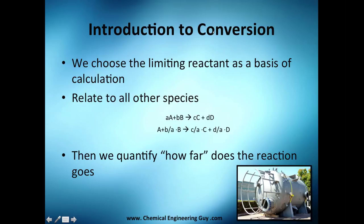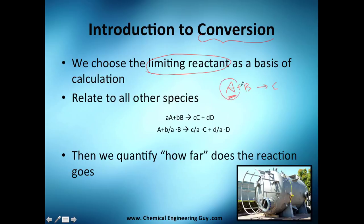The first thing we need to understand is why we need conversion. We choose the limiting reactant as our basis of calculation. In a reaction like A plus B gives C, A is the limiting reactant, and we base everything on this species. Once identified, we relate all other species to A by dividing their stoichiometric coefficients by A's coefficient.